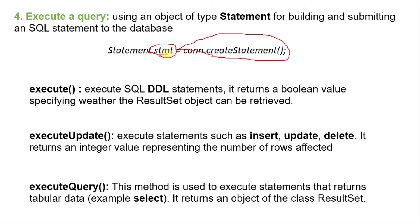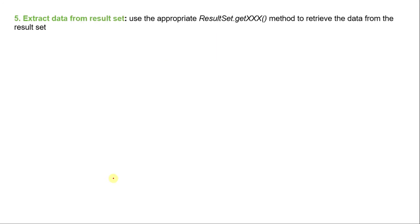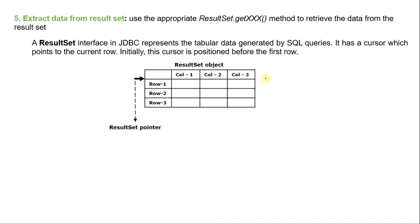If you want to retrieve data from the database, for example a SELECT query, use the executeQuery method. This method returns data as a table in the form of a ResultSet object. ResultSet is an interface, and the returned object contains the result as table-type data consisting of rows and columns.